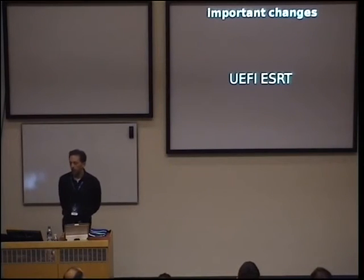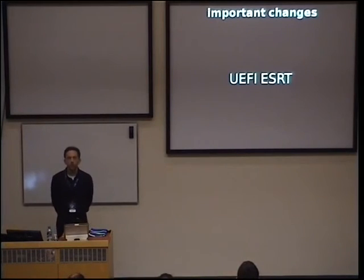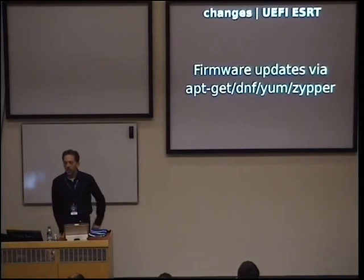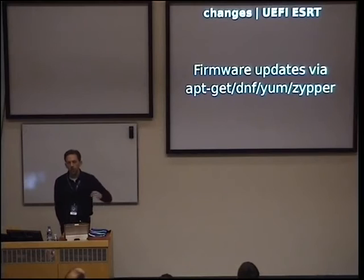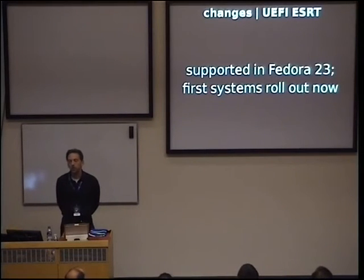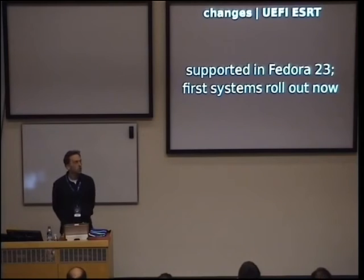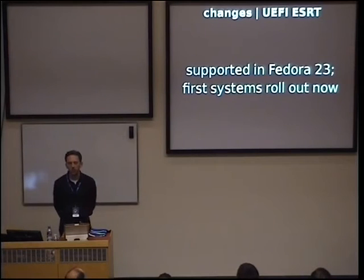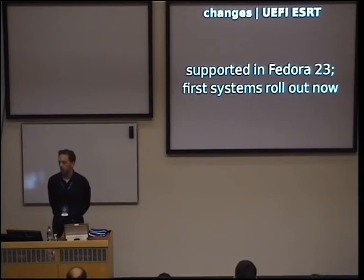There's also UEFI ESRT — a feature where your distribution can put updated firmware somewhere, save it in the firmware itself, and during the next boot it's automatically updated. This makes firmware updates as simple as updating any other software. It's supported in Fedora 23 already, but the feature also needs to be implemented in hardware, and the first systems using it are coming out now. It remains to be seen if we'll all use this in two or three years to update firmware in notebooks and servers.